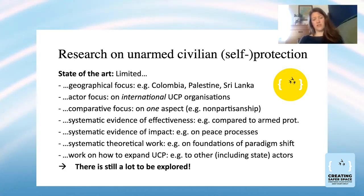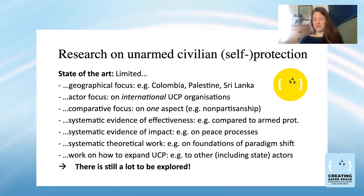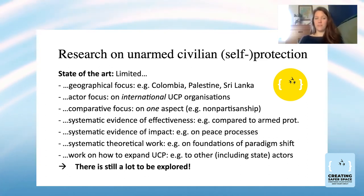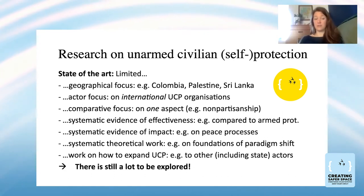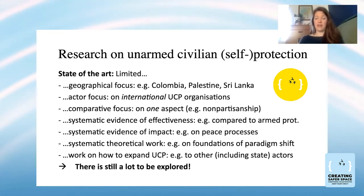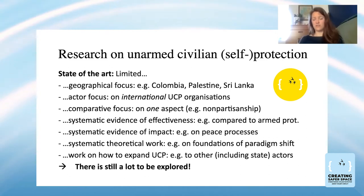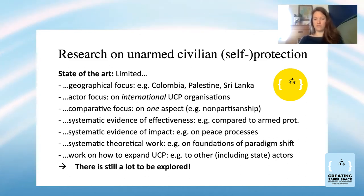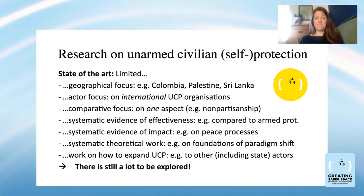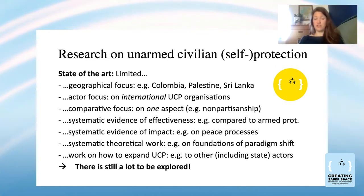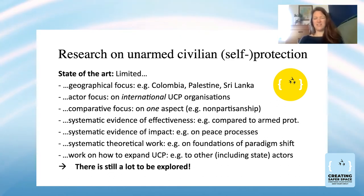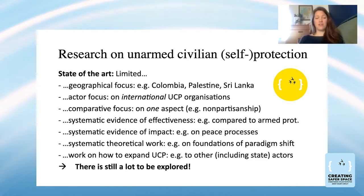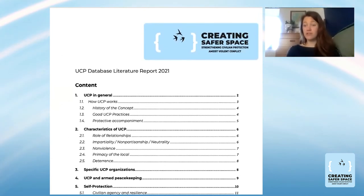The self-protection literature — how communities protect themselves — is still quite new and there is a lot to explore. There are studies on civilian agency and resilience, community-based protection, and zones of peace, but the zones of peace literature is quite focused on Latin America. There is also some literature on gender, privilege, and colonialism in UCP practices, and the notion of space — how safer space is being created — which relates directly to the name of this research network.